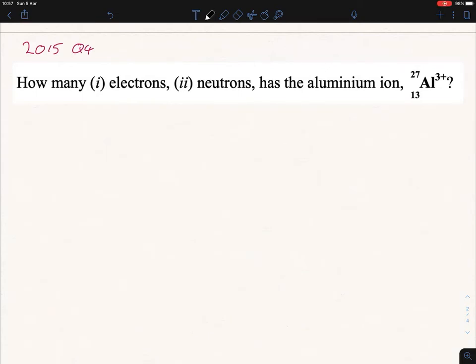Hi everybody, so today we're going to look at subatomic particle calculations and we'll specifically focus on 2015 question 4. So again, as we've seen in the past videos, we've got an ion present here and we are asked to figure out the number of electrons and the number of neutrons.